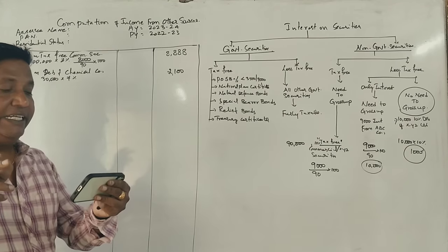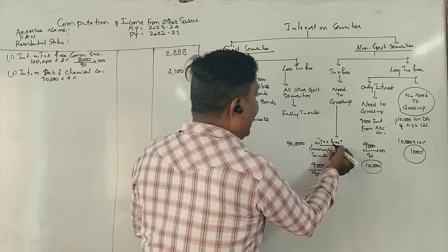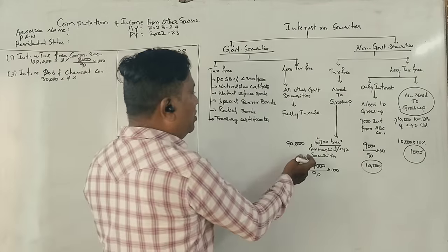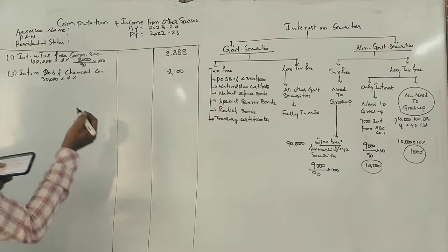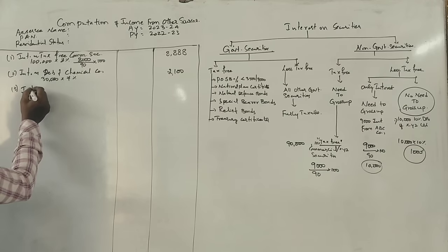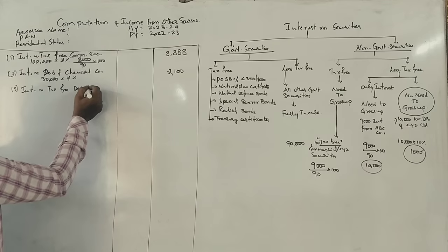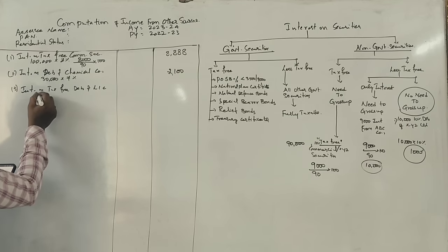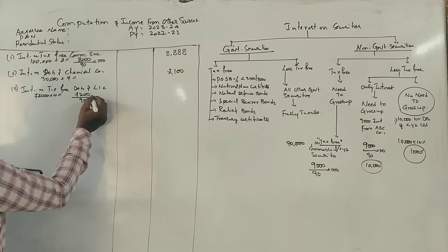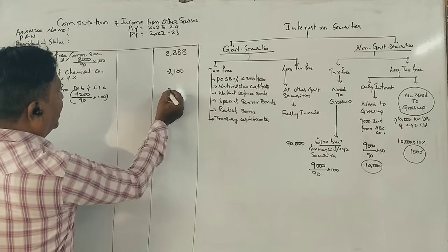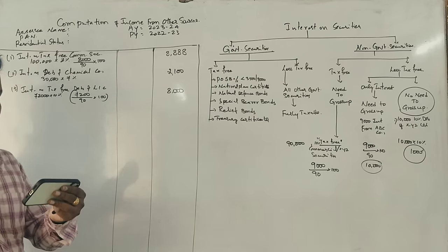Rs. 72,000, 10% tax-free debentures of LIC. 72,000 into 10% equals 7,200, divided by 90 into 100 equals Rs. 8,000.